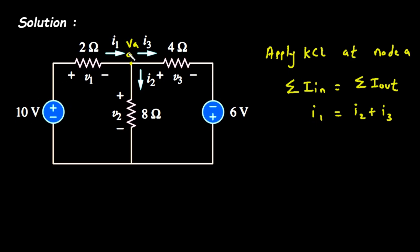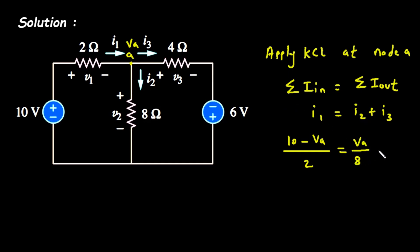We can write I1 in the form of voltage as (10 − VA) / 2. So: (10 − VA) / 2 = I2 + I3. I2 in terms of voltage is (VA − 0) / 8, and I3 is (VA − (−6)) / 4.